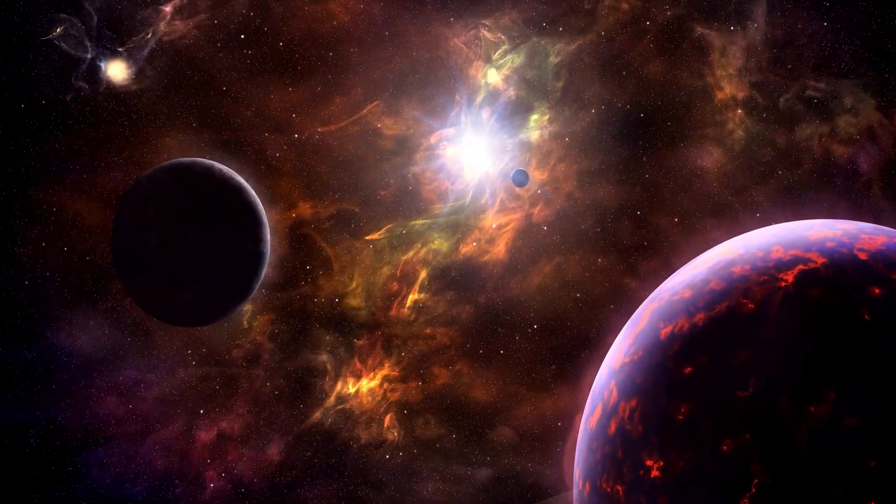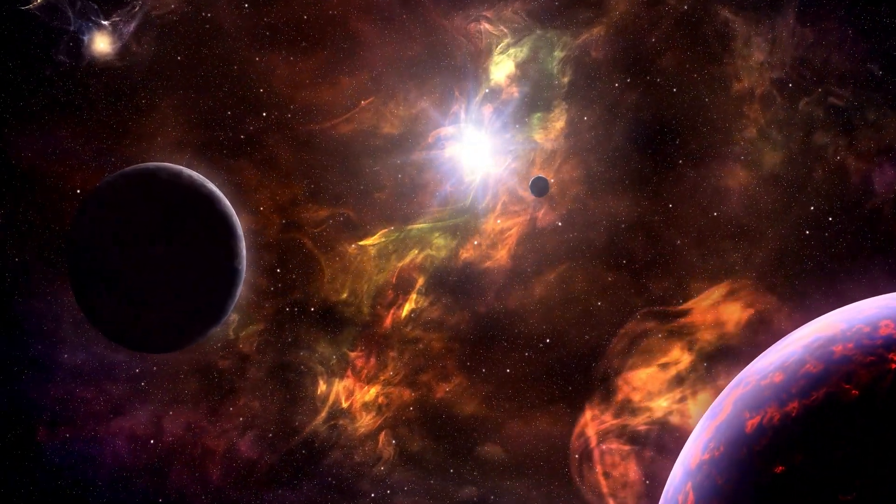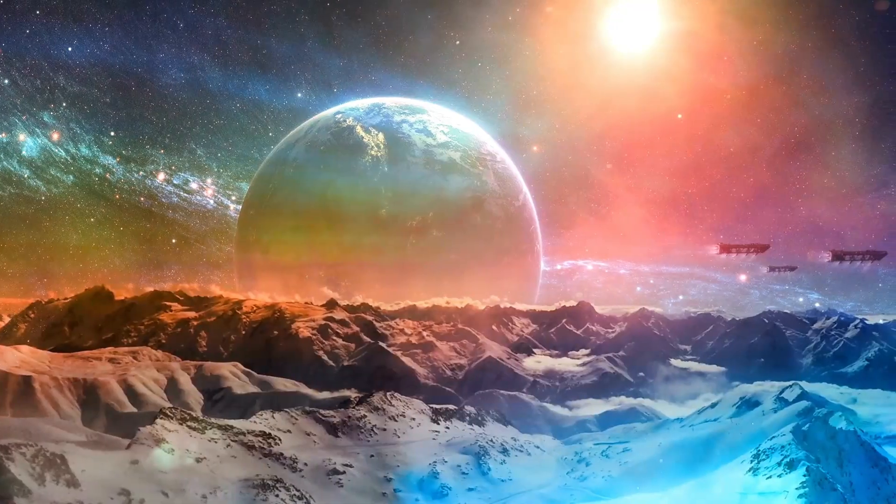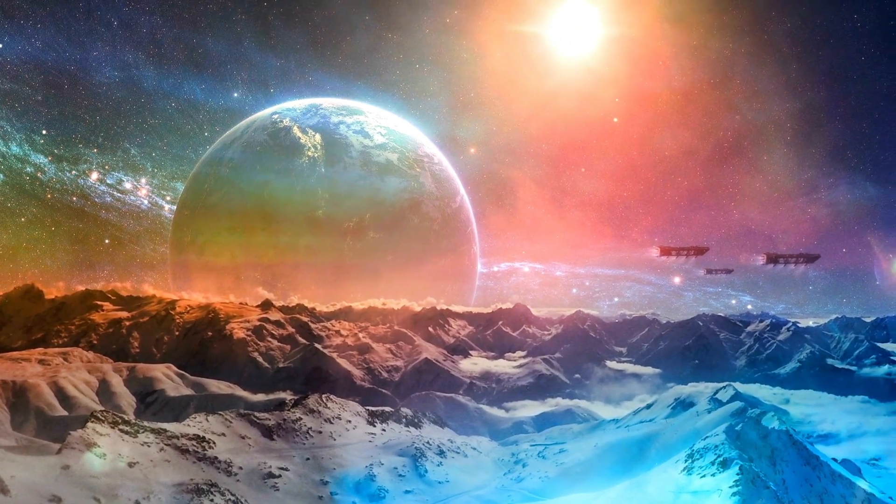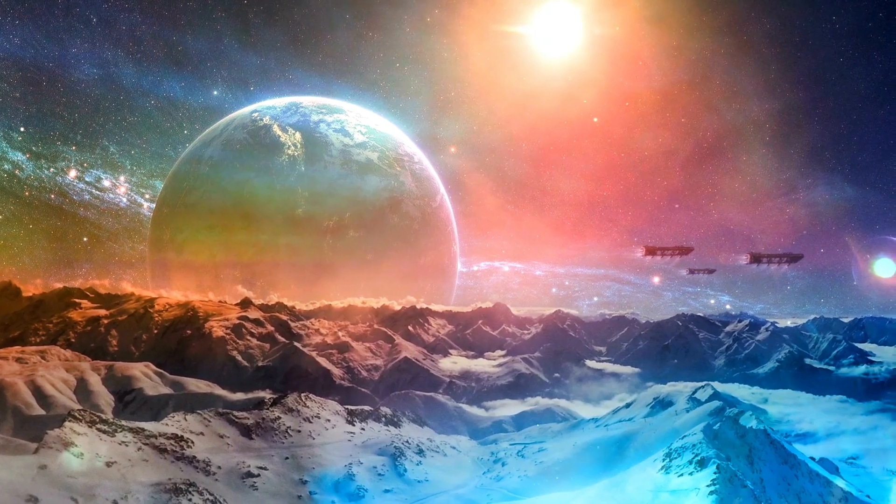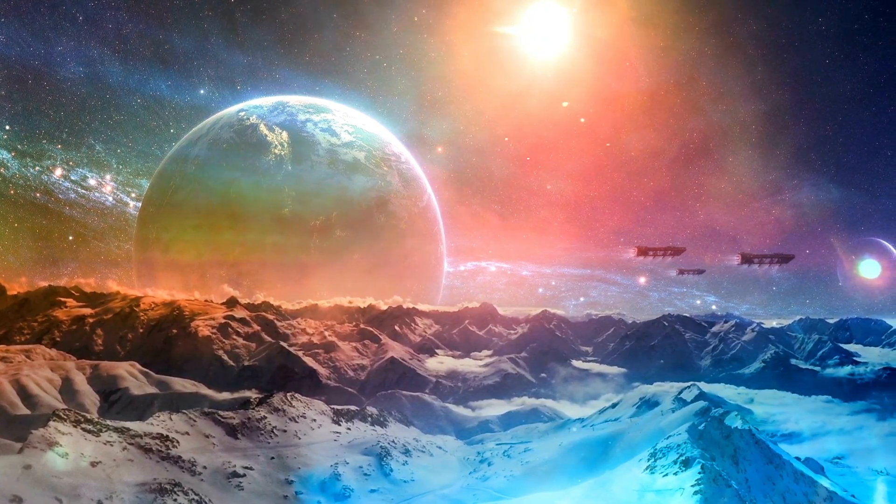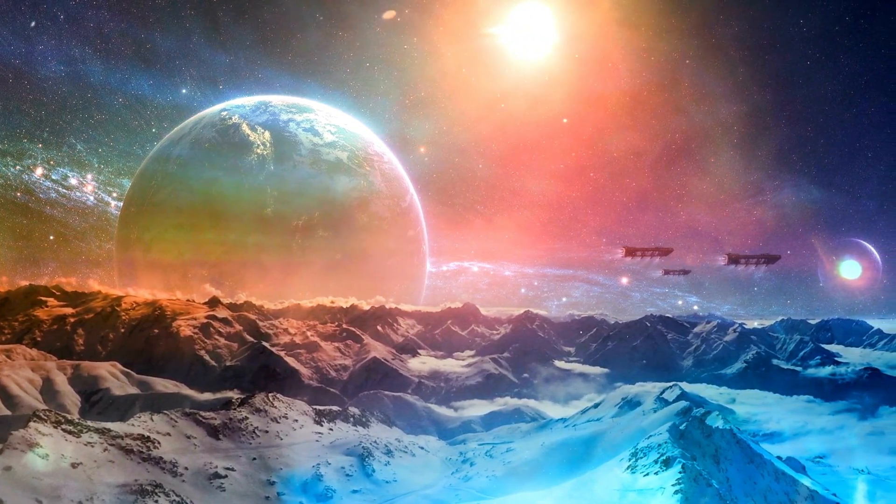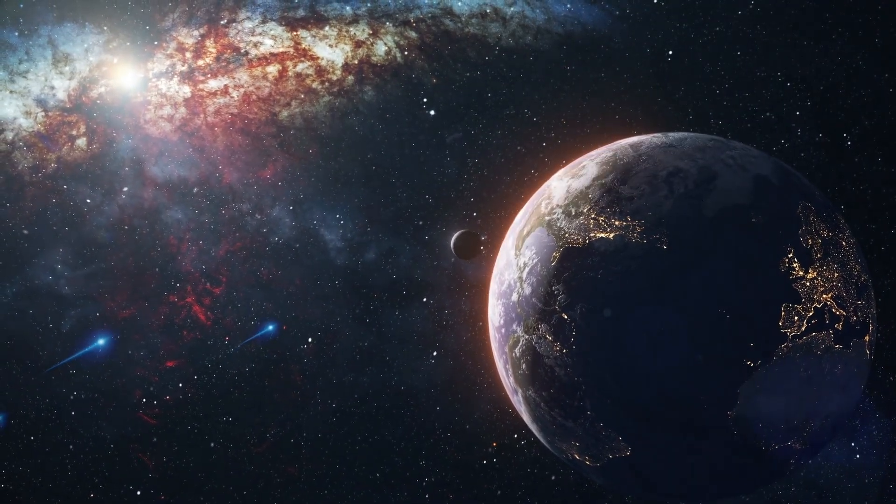However, Proxima b does receive enough sunlight for temperatures and liquid water similar to those on Earth. Due to its close proximity to the star, Proxima b is thought to be tidally locked, always showing the same side to the star, much like the Moon does in relation to Earth.